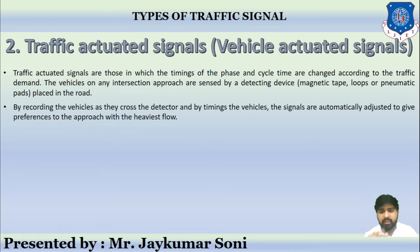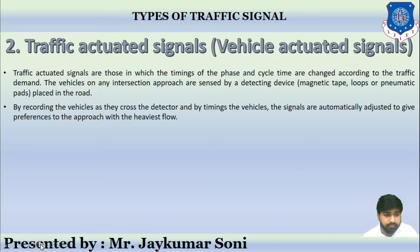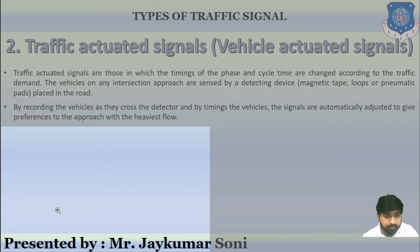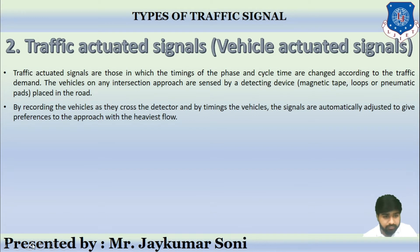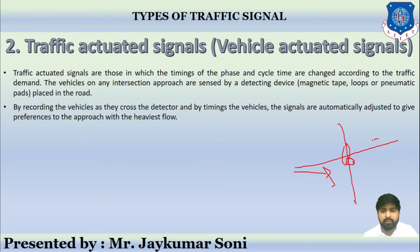For example, if this is a crossroad and the signal senses that from one direction the vehicles are in heavy flow and from another direction the vehicles are in lighter flow, then it will adjust the cycle of red, green, and amber according to the traffic demand.